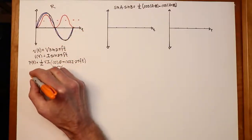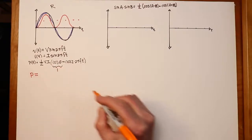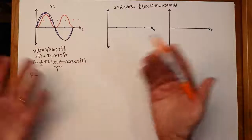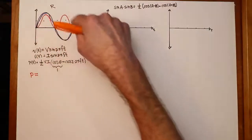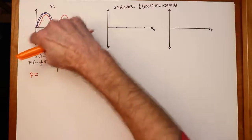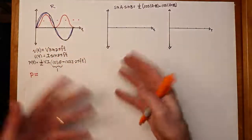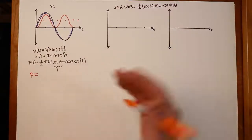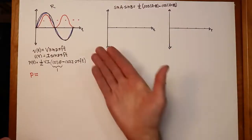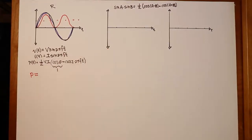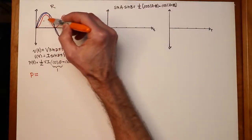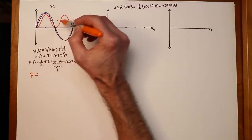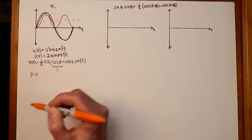What we ultimately care about is the average power. Physical devices can't heat up and cool down with normal waveforms — whether 100 Hz, 1 kHz, or 1 MHz. Just like a frying pan doesn't immediately come to temperature or cool off, there's a thermal time constant. Since the AC part is a sine wave, the positive peaks fill the negative valleys, and the average value is just the constant: VI over 2.